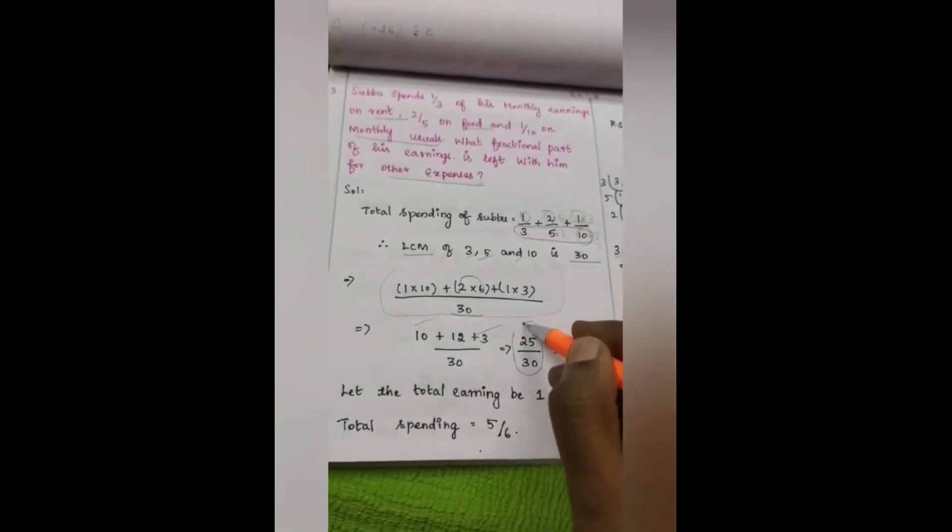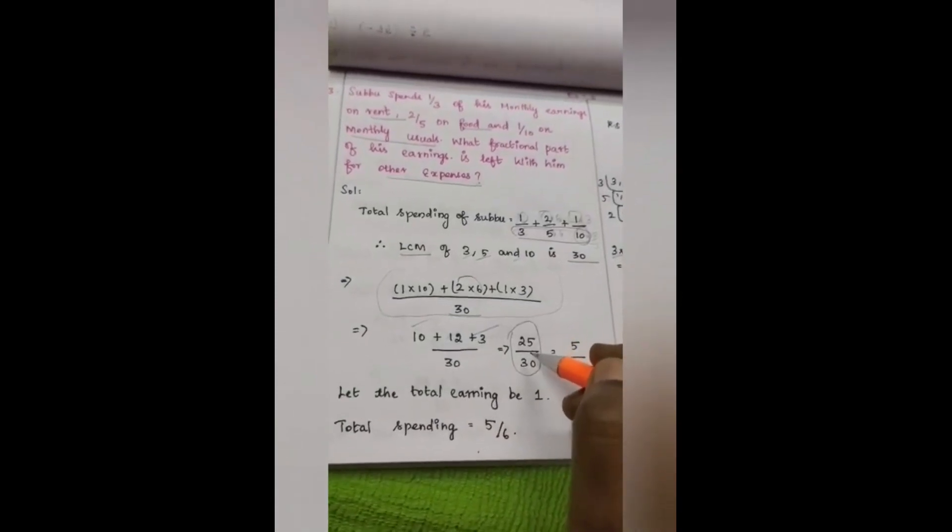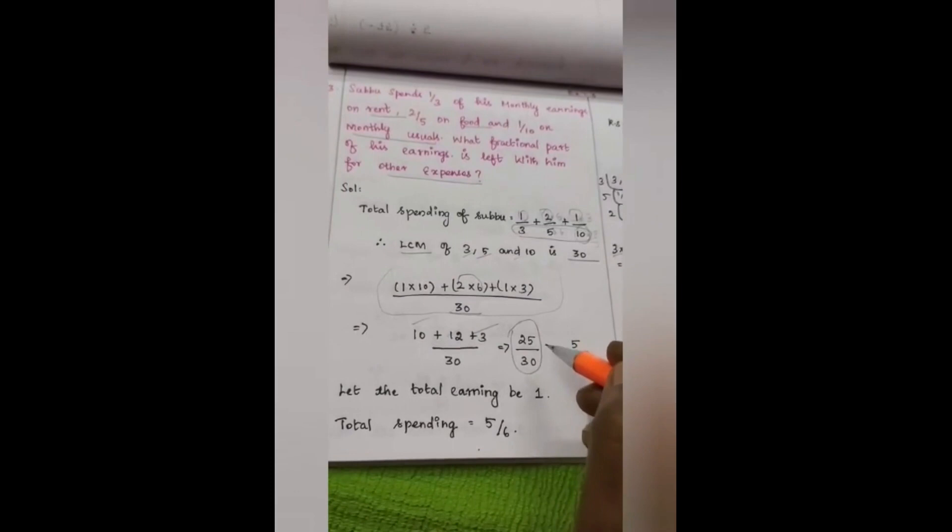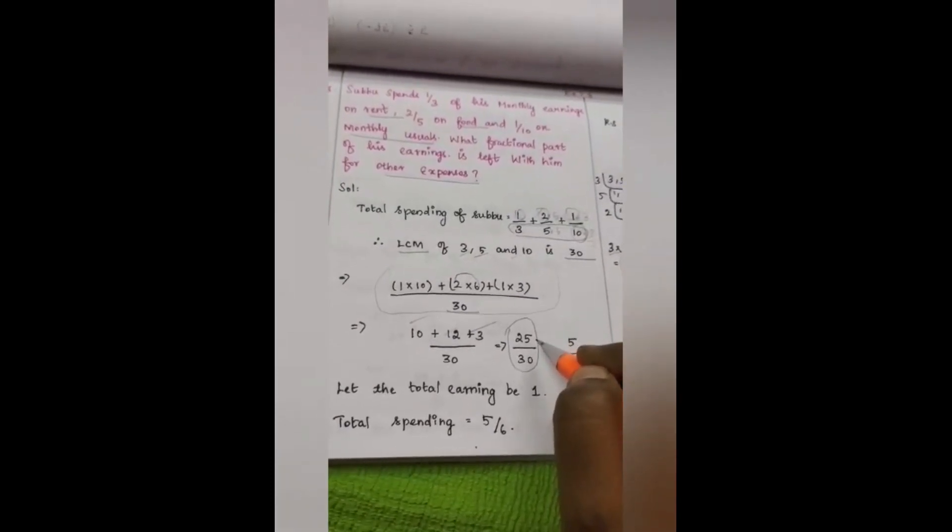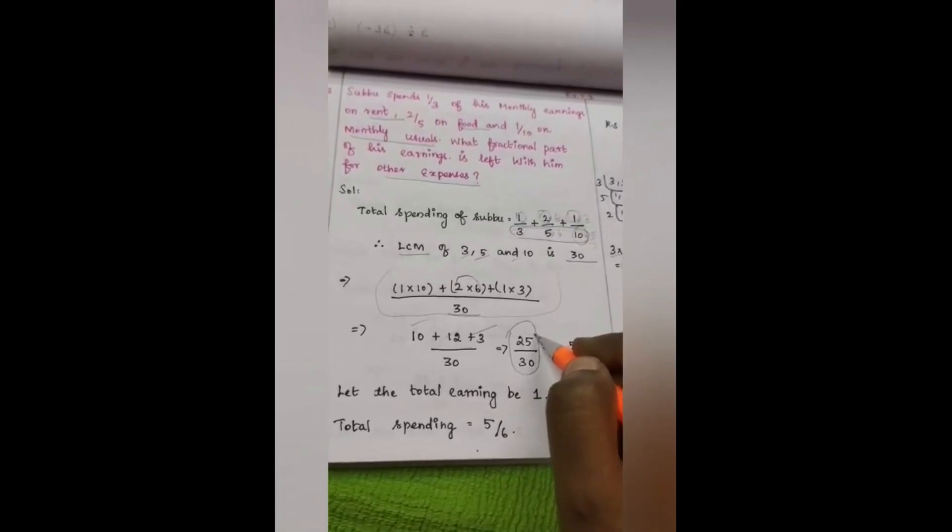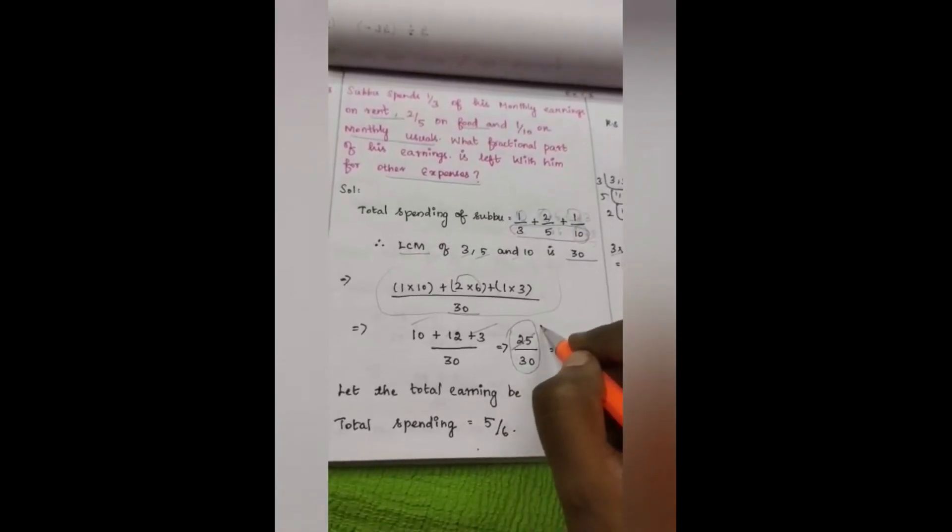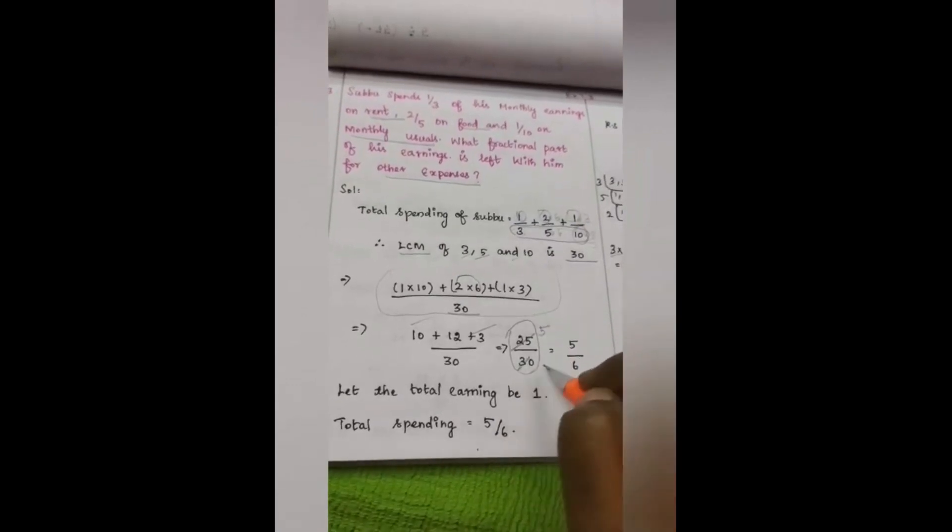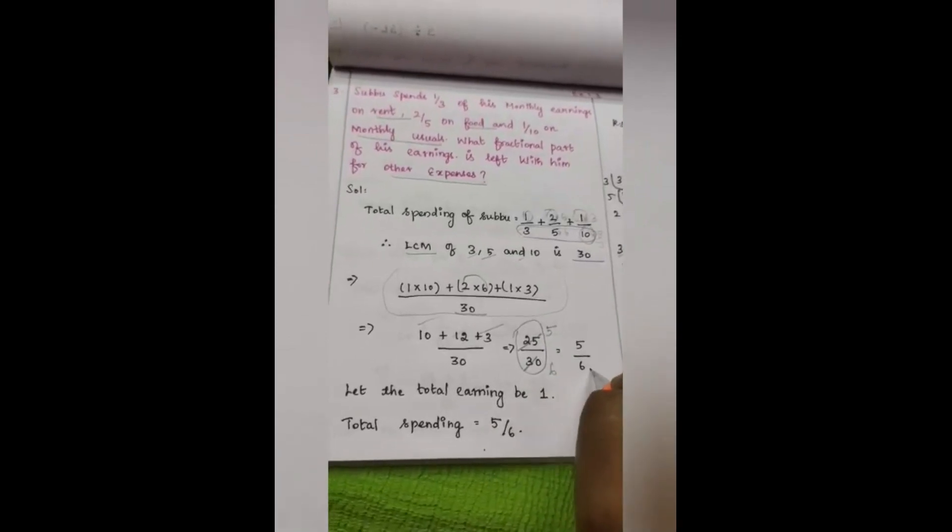After getting like this, we need to check whether it can be cancelled using same table or not. We can cancel it using same table, using 5 table. In 5 table, 25 becomes 5 times and 30 becomes 6 times. So which equals 5 by 6.